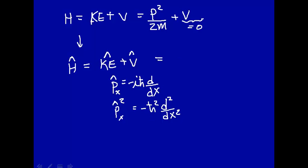So if we put this second derivative in here, we get that the kinetic energy operator is minus h bar squared over 2m times the second derivative with respect to x.